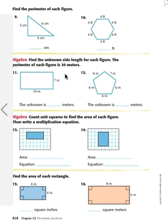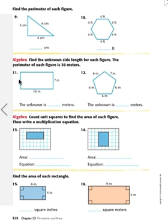Let's look at number 11. It says find the unknown side length for each of the figures. The perimeter of each figure is 30 meters. So we know that this is 10 here, so if this is 10, then this has to be 10 up here too. So far we have 10 and 10, that's equal to 20. Now we need to get to 30 using two sides. What gets me to 30 from 20 is 10, and if I split that in half, each side is 5 meters.